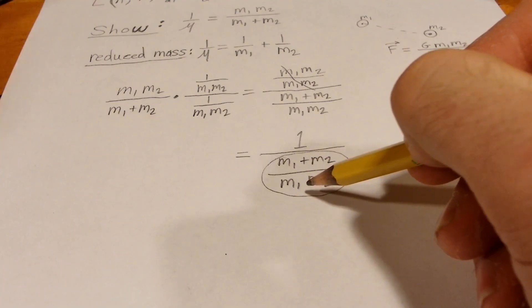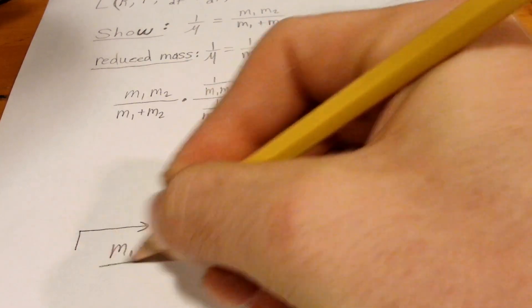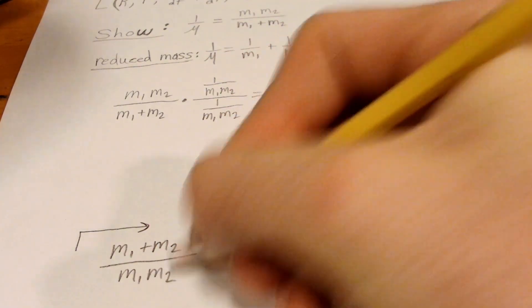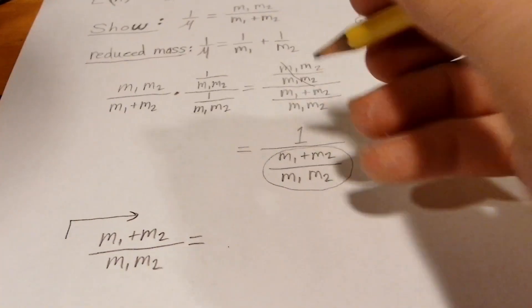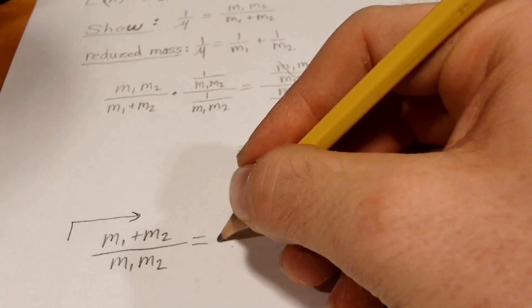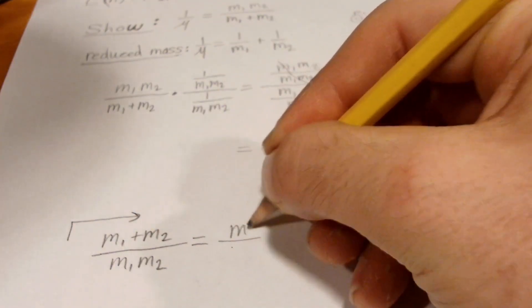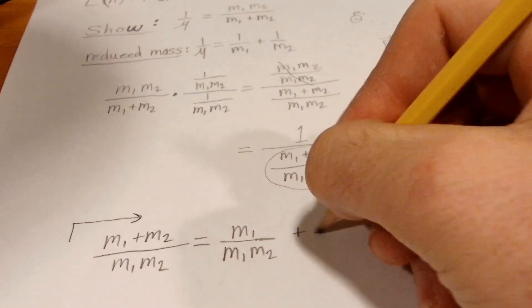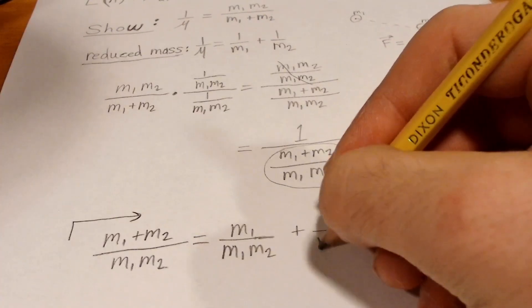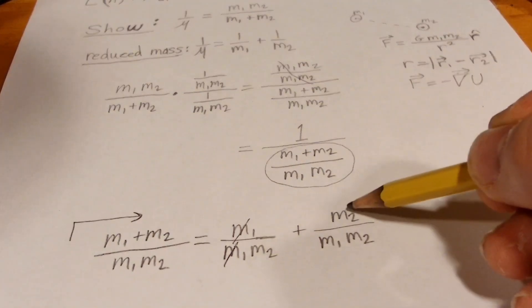because this here is going to equal mu and I'll show it right here. So since we now got common denominators here we can break up the addition into M1 over M1 times M2 plus M2 over M1 times M2. So the M1's will cancel over here, the M2's will cancel over here